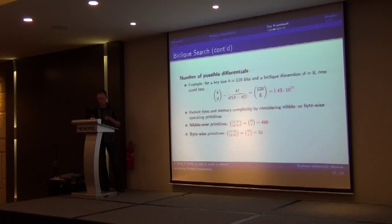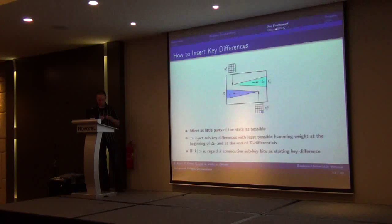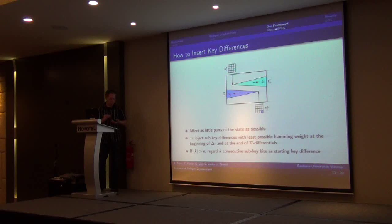One had to test so many forward and same number of backward differences, also in that simple setting one already had to test about 2 to the 74 differences if they are independent. Nevertheless, for nibble-wise or byte-wise operating primitives, one can reduce time and memory complexity drastically by considering them. For instance, a nibble-wise primitive like LED64 one had to test only 432 or 496 differences.